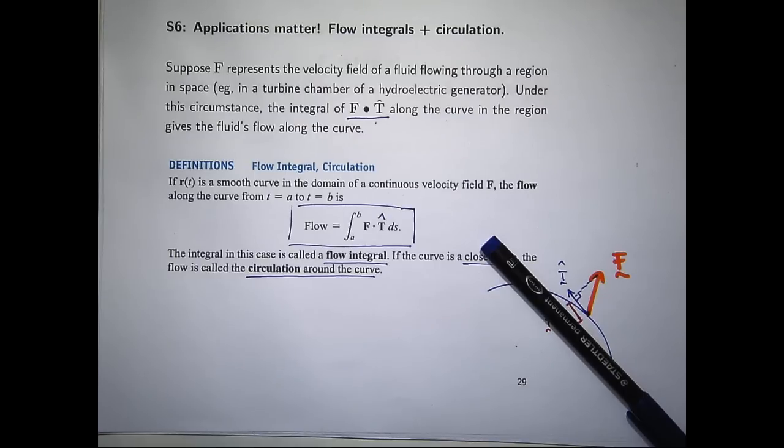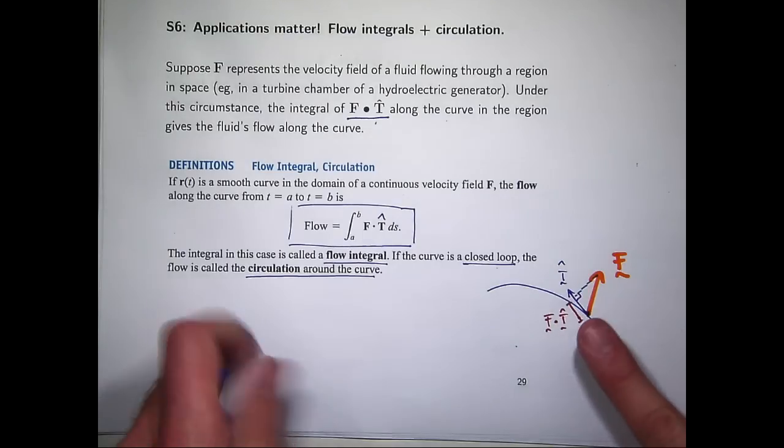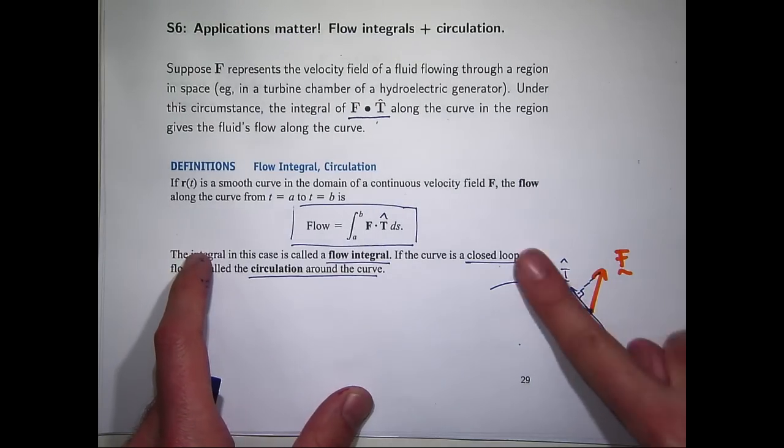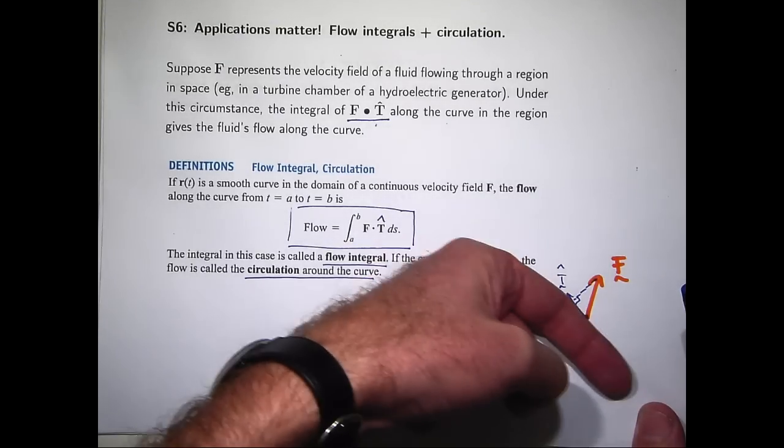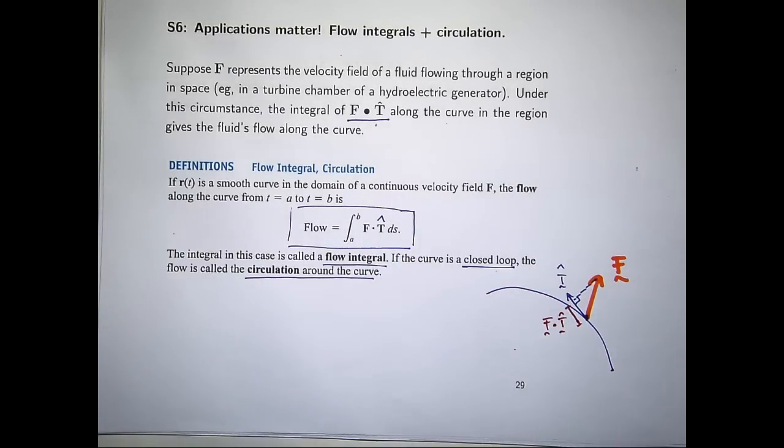So you'd expect a positive, a large and positive value for the case where F is pointing in the same direction. If it was pointing in the opposite direction, you'd get a value that was large and negative.